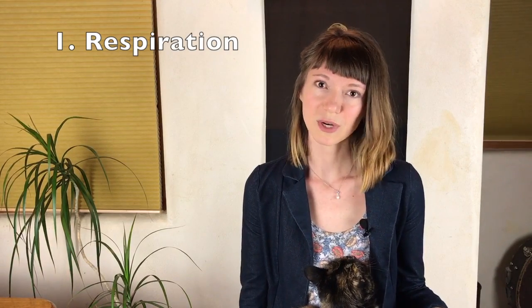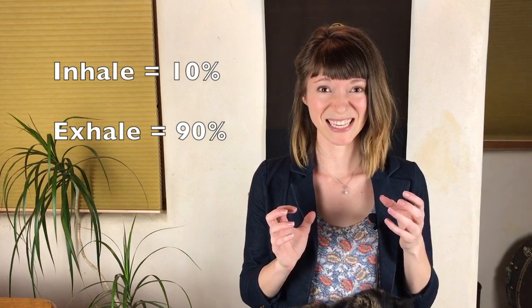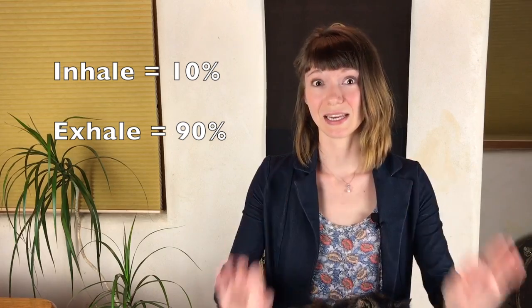After our brain thinks of what it wants to say and then creates a motor plan, first we use respiration, or breathing. This is the energy behind our speech. What's amazing is that our inhale to exhale ratio at rest is about 50-50 or 40 to 60 percent. For speech, our inhale to exhale ratio is 10 percent to 90 percent, meaning we inhale 10 percent of our capacity and then exhale 90 percent.